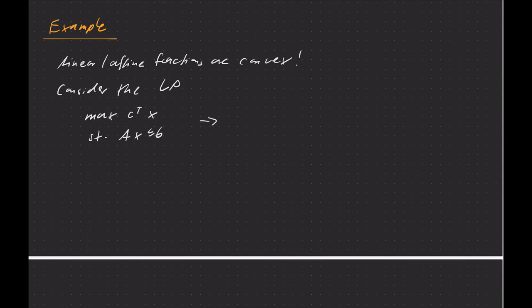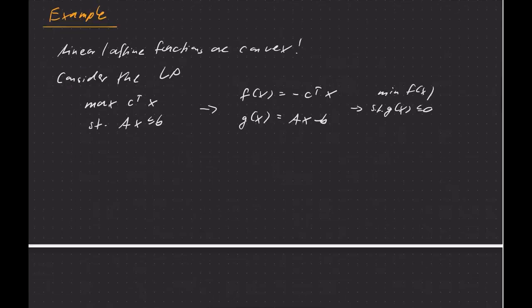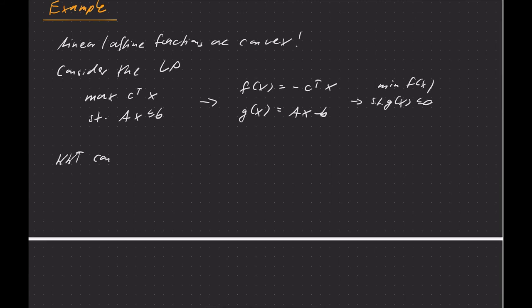We can easily convert that into a problem in this KKT form. We need a minimization problem. So the objective function should be minus cᵀx. And of course, we need to rewrite the constraints just a little so that the right hand side becomes zero. So we need to define g(x) as Ax - b. And then this whole problem becomes minimize f(x) subject to g(x) ≤ 0. That's exactly the KKT problem. Now we can look at the KKT conditions for that.